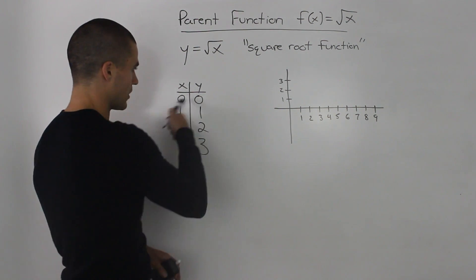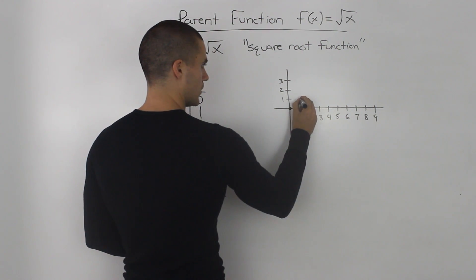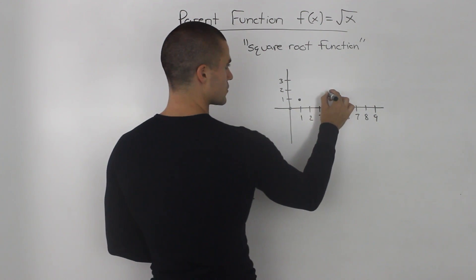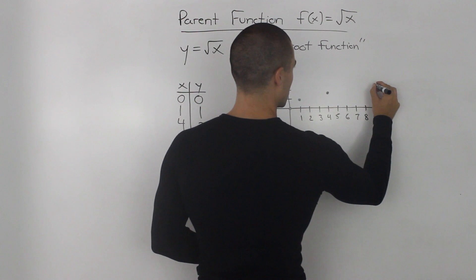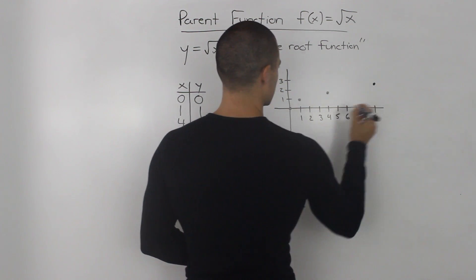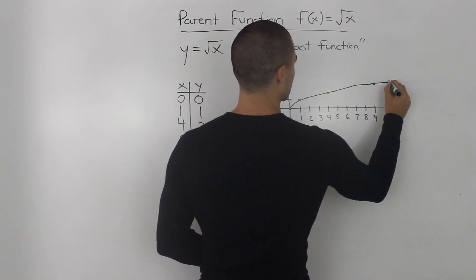So if we take these points and plot them, 0, 0 is here, 1 and 1 is here, 4 and 2 is here, and then 9 and 3 is down there, so it looks something like this.